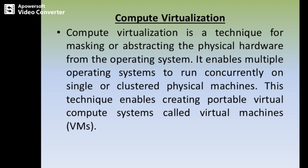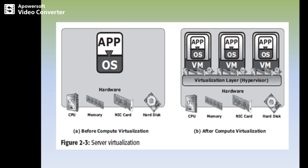This technique enables creating portable virtual systems called virtual machines or VMs. In the diagram we can observe that before virtualization, one operating system runs with one application on the physical hardware. But after compute virtualization, more than one operating system can run on the physical system, each with different applications. Each respective block is called a virtual machine, present on the virtualization layer on the hardware.